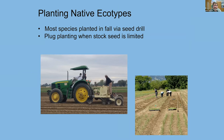Planting seed of known genetic origin usually starts with planting seed using a Truax seed drill in the fall. Often we don't have enough seed available, so we grow it out into containers and then plant into the ground. It takes about 25,000 plugs to fill an acre, to give you a sense of the scale involved.